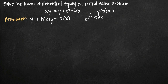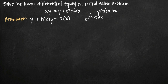Today we're going to be talking about how to solve the linear differential equation initial value problem. In this particular problem, we've been given the linear differential equation x times y prime, or the derivative of y, is equal to y plus x squared times sine of x. And we've been given the initial condition y of pi is equal to zero.